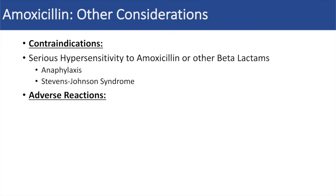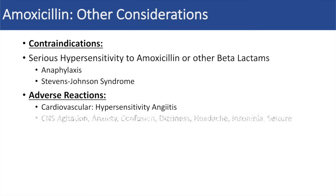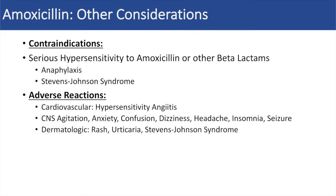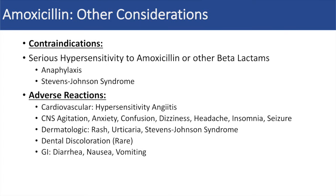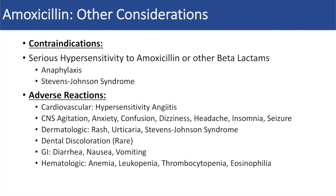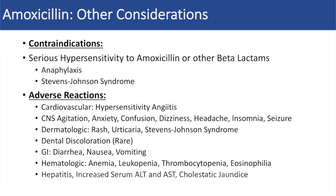What are some of the adverse reactions of amoxicillin use? Amoxicillin can cause a variety of adverse reactions including hypersensitivity and angiitis. It can cause CNS effects such as agitation, anxiety, confusion, dizziness, headache, insomnia, and seizure. It can cause rashes, urticaria, and Stevens-Johnson syndrome if the patient is allergic to amoxicillin or beta-lactam antibiotics. It can cause dental discoloration like the tetracyclines, though this is extremely rare. It can cause diarrhea, nausea, and vomiting. Hematologic issues such as anemia, leukopenia, thrombocytopenia, or eosinophilia may also occur. It can cause hepatitis, increased serum ALT and AST, or cholestatic jaundice. It can also cause anaphylaxis, though many of these adverse reactions are quite rare and usually are not an issue.